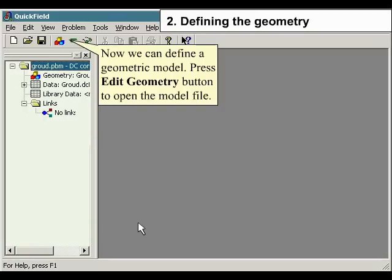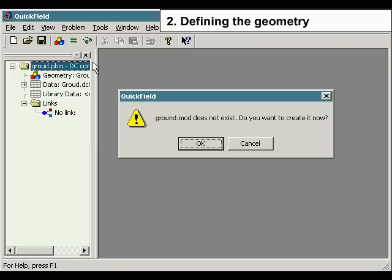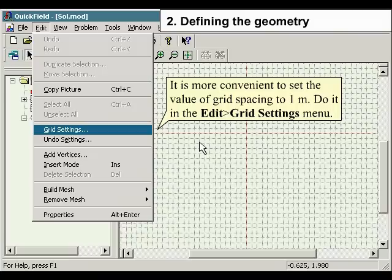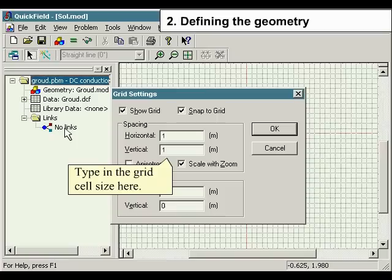Press Edit geometry button to open the model file. It is more convenient to set the value of grid spacing to one meter. Do it under the Edit menu and select grid settings, type in the grid cell size here.